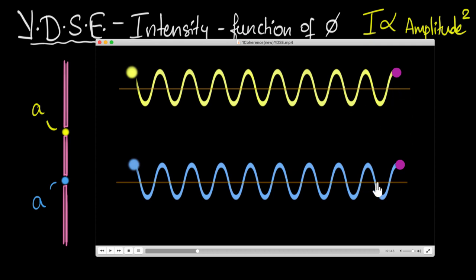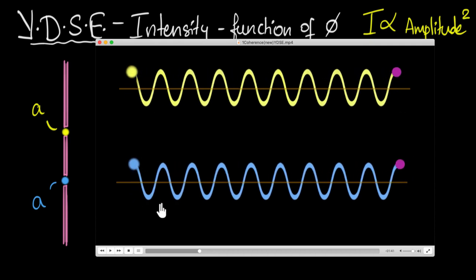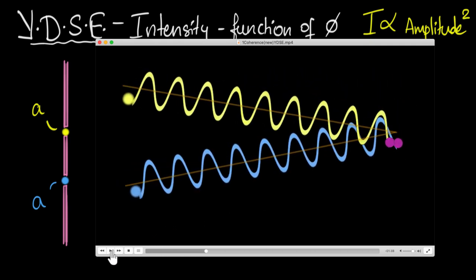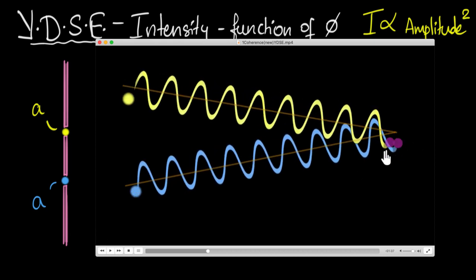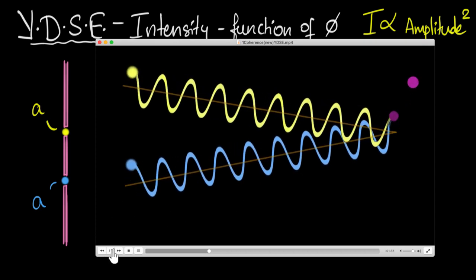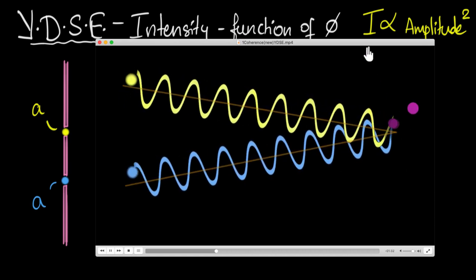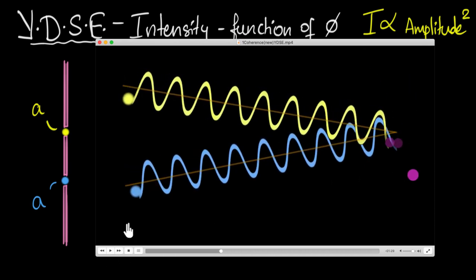Now what we are interested in is what happens when they meet at a point on the screen — what happens to the resulting amplitude? Over here, notice their individual contributions are in sync with each other, because this distance and this distance are exactly the same. These two oscillations end up becoming in sync. And so if these two were to meet at one point, the resulting oscillation would have twice the amplitude. Each one has amplitude A and they are in sync — it's like two forces in the same direction, so the resulting would be twice that: two A. The square of that gives the intensity.